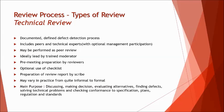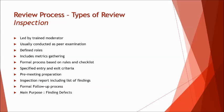The next and last type is inspection. If you recall the formal review process from the previous tutorial, inspection is exactly the same thing. ISTQB wants you to understand how a formal review must be conducted, and inspection is the most formal review process. All points fall as per the formal review process: led by a trained moderator, usually conducted as peer examinations, defined roles including metrics gathering, formal process based on rules and checklist, specified entry and exit criteria, pre-meeting preparation, inspection report including a list of findings, and a formal follow-up process. The only purpose of inspection is to find defects.